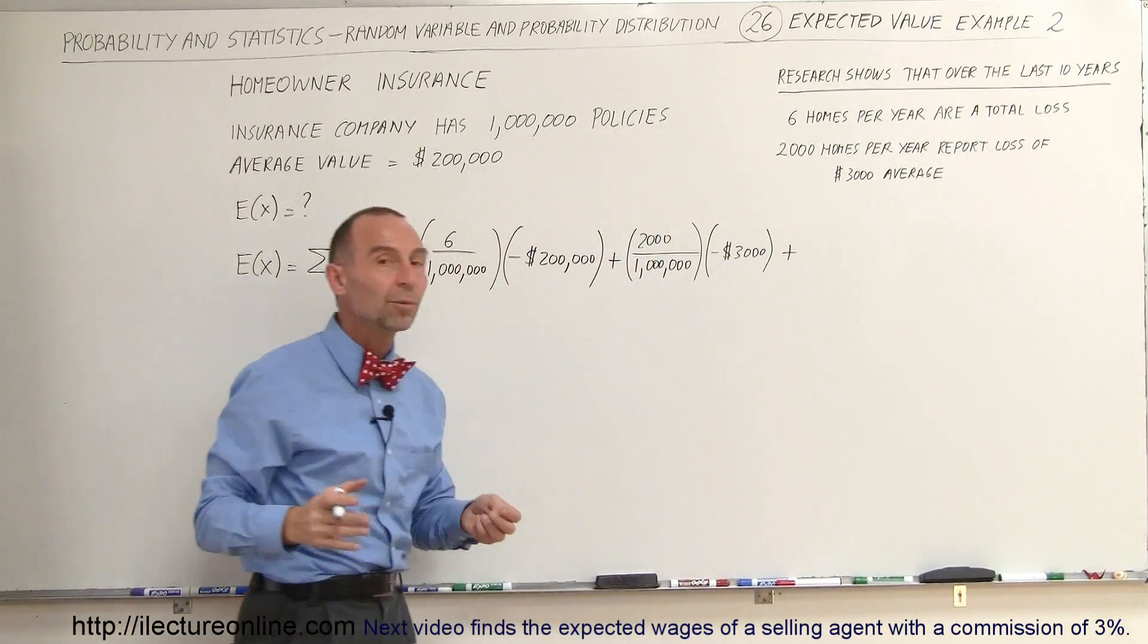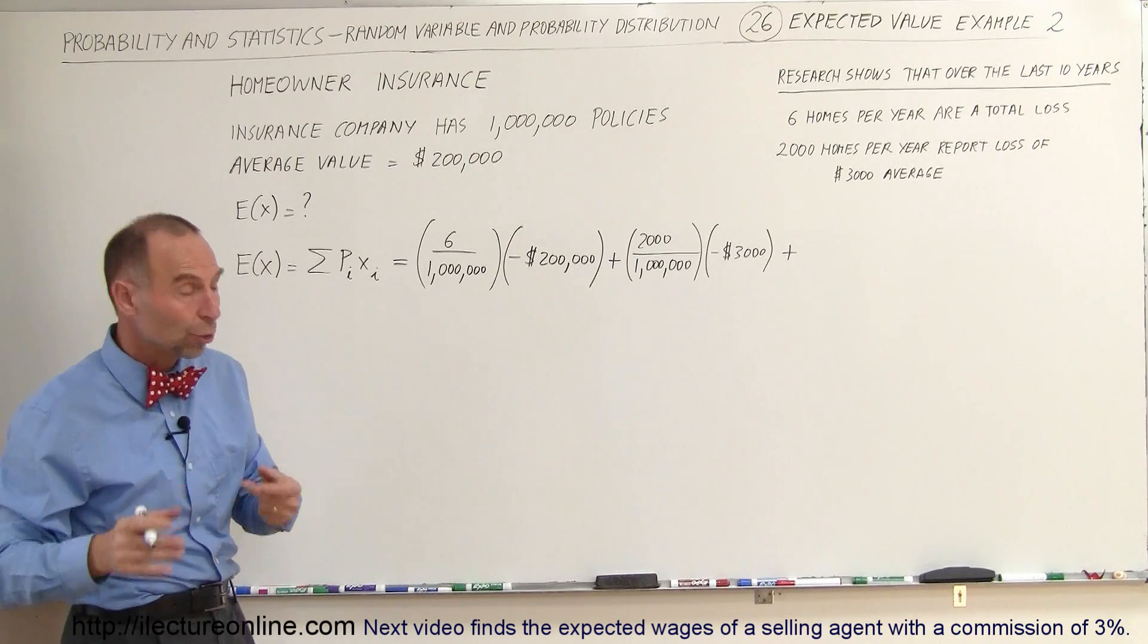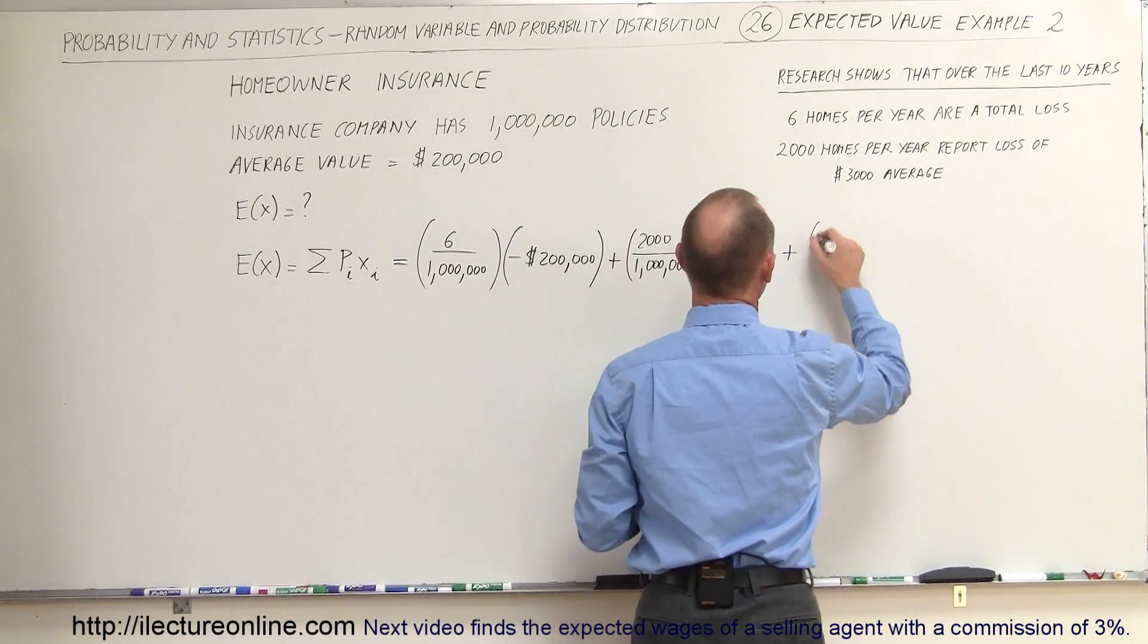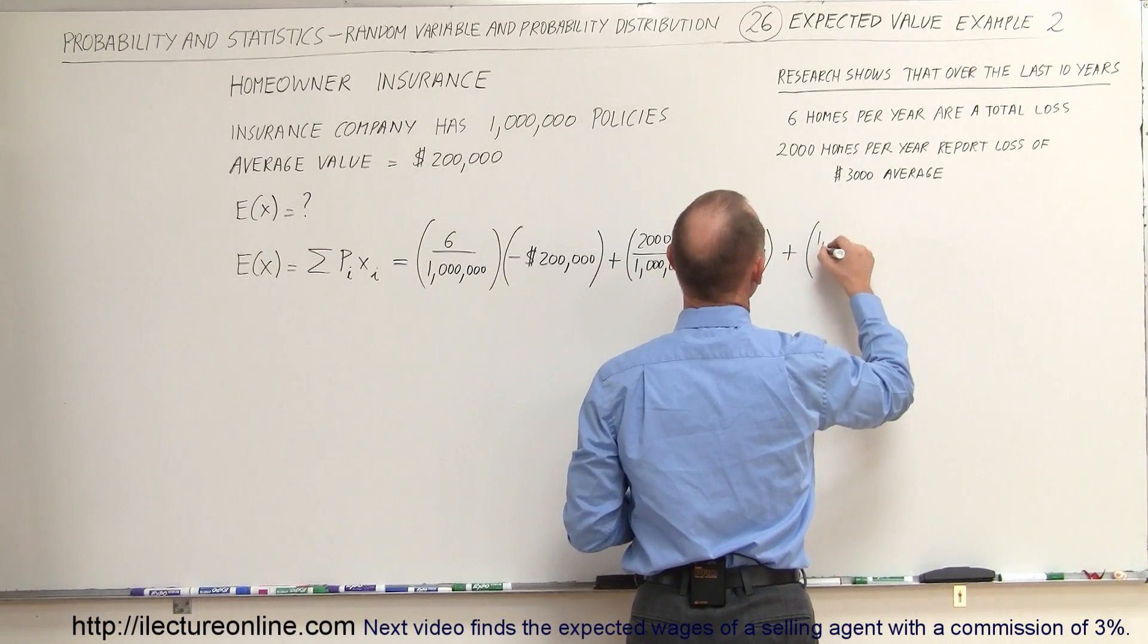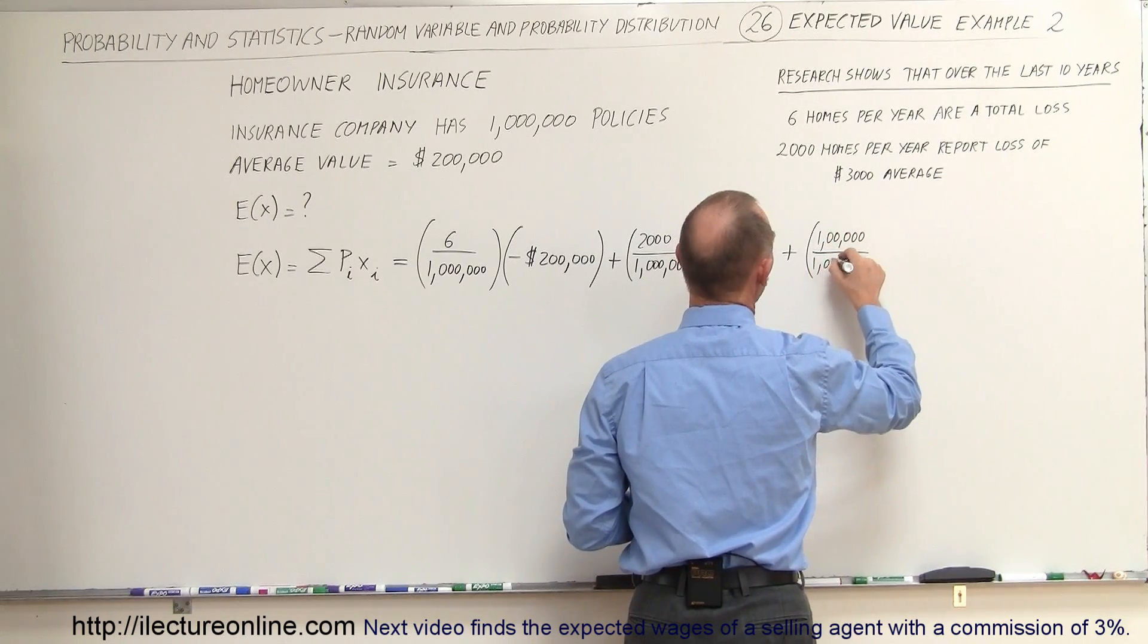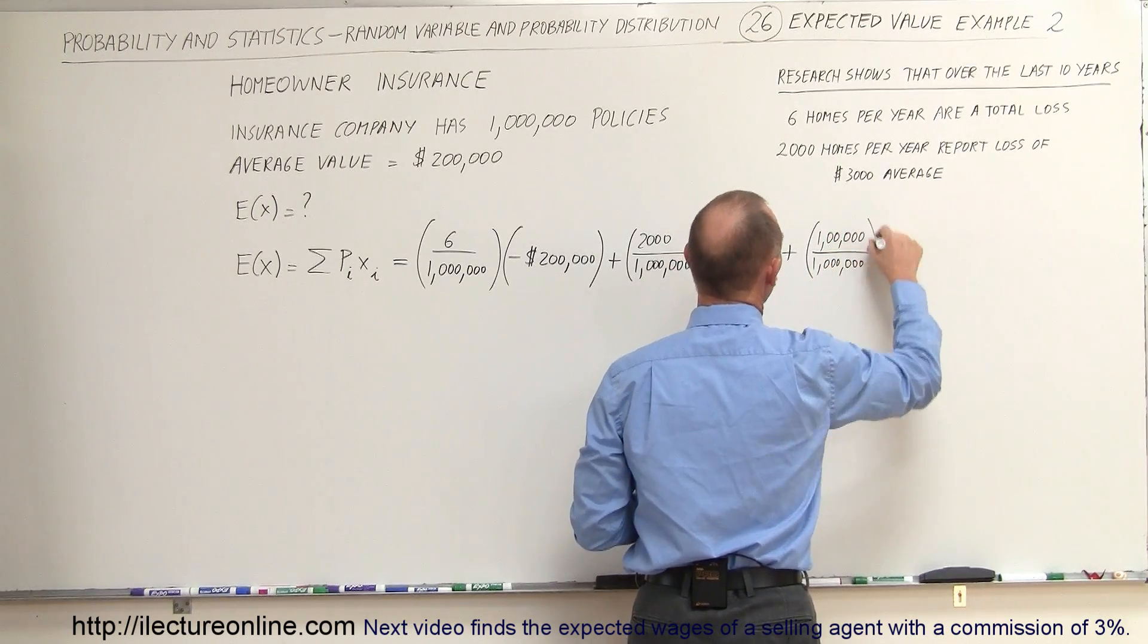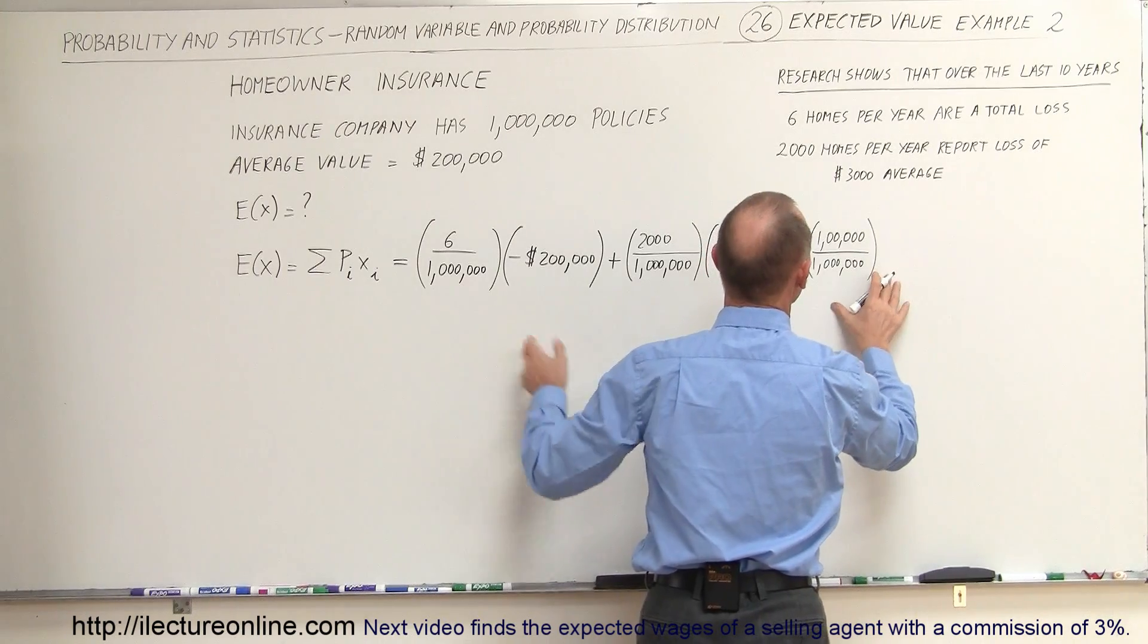Plus, now we would be receiving premiums from the 1 million homeowners. And that would be 1 million out of 1 million, because they would all be paying premiums, even the ones that have damage and losses.